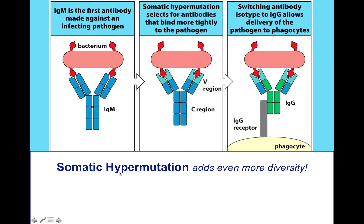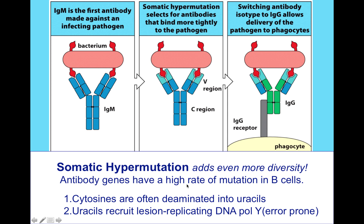In addition, B cells undergo a phenomenon called somatic hypermutation. It occurs in B cells at a high rate of mutation — cytosines are deaminated into uracils. The uracils recruit the lesion-replicating DNA polymerase Y, which is very error-prone. Because of this high deamination rate in these cells, you end up with a whole lot more diversity because mistakes are being made when attempting to repair the DNA.